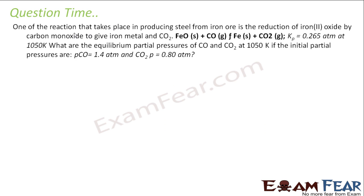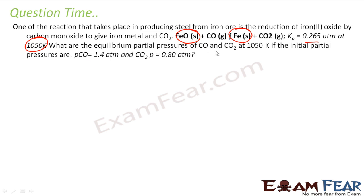One of the reactions that take place in producing steel from iron is the reduction of iron by carbon monoxide, to give iron metal and CO₂. The reaction is: FeO + CO gives Fe solid plus CO₂ gas. Note there is a solid part here — this makes it a little tricky. Kp is 0.265 atm at 1050 Kelvin.